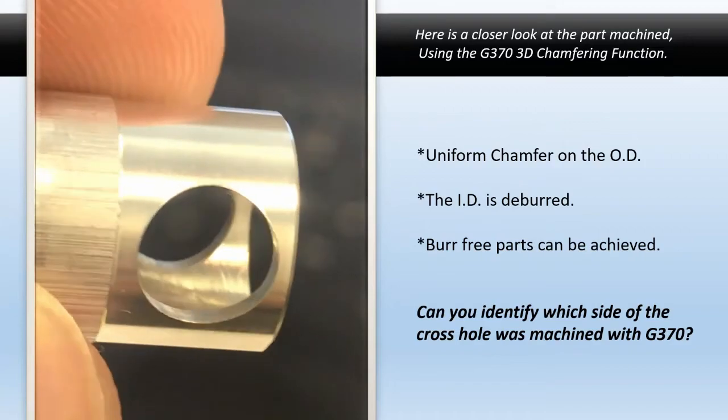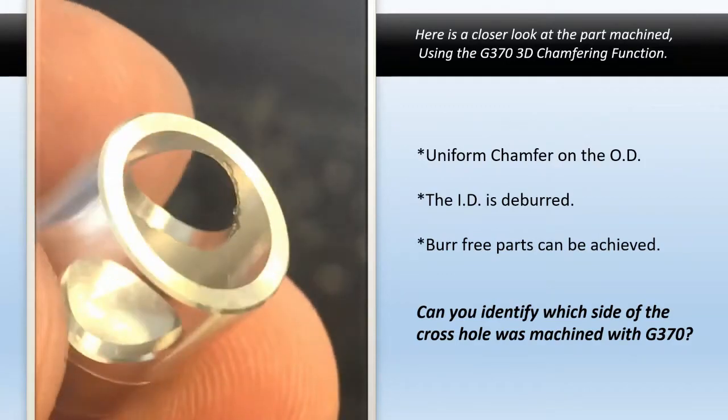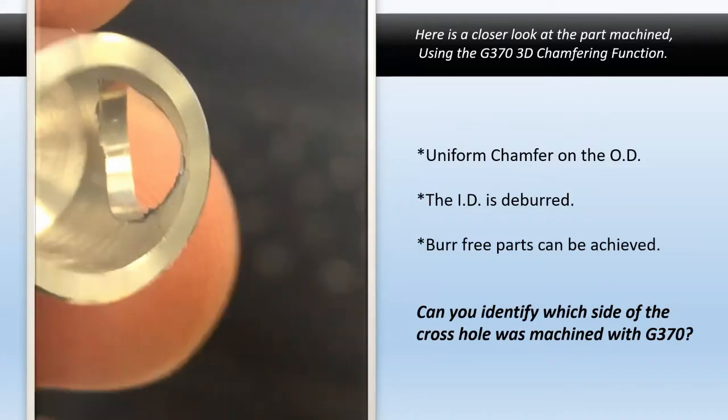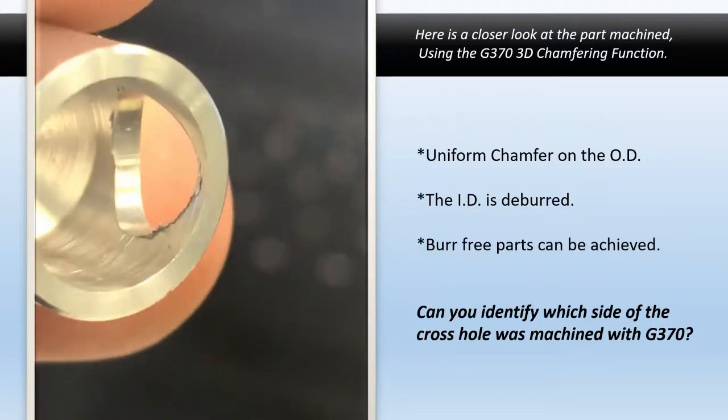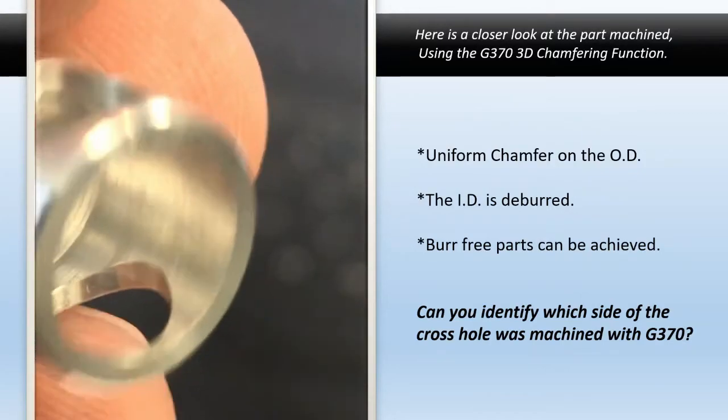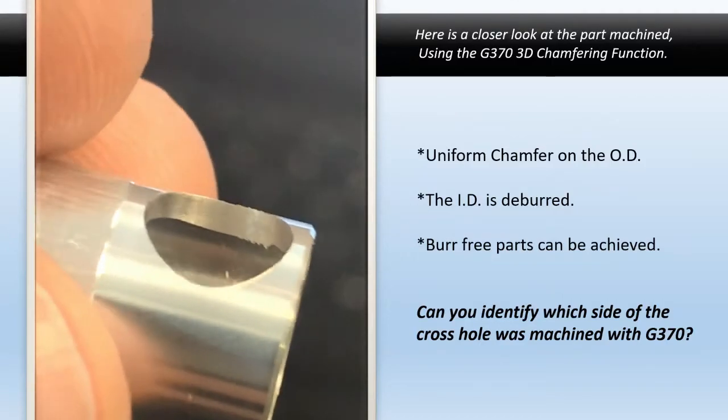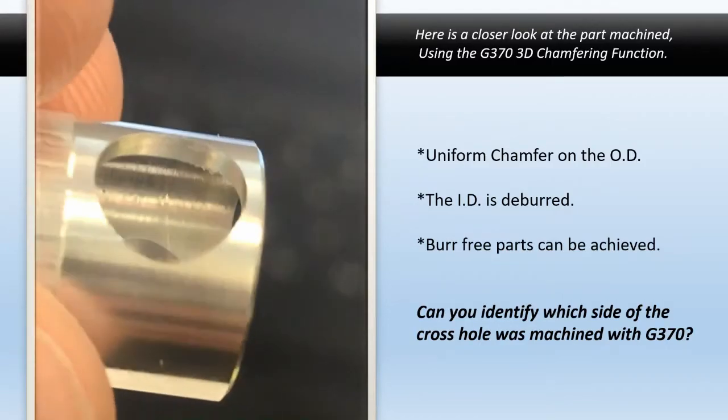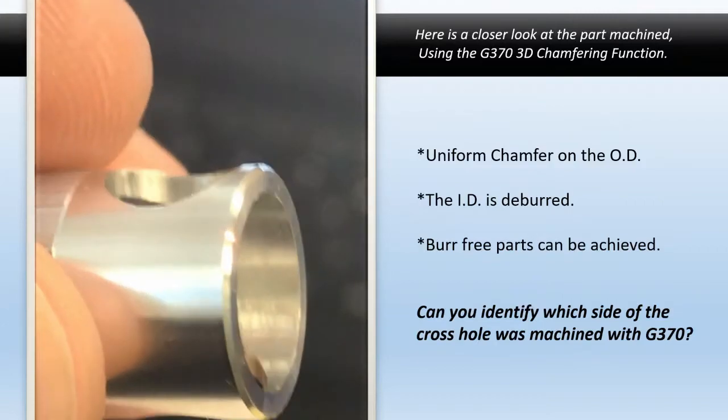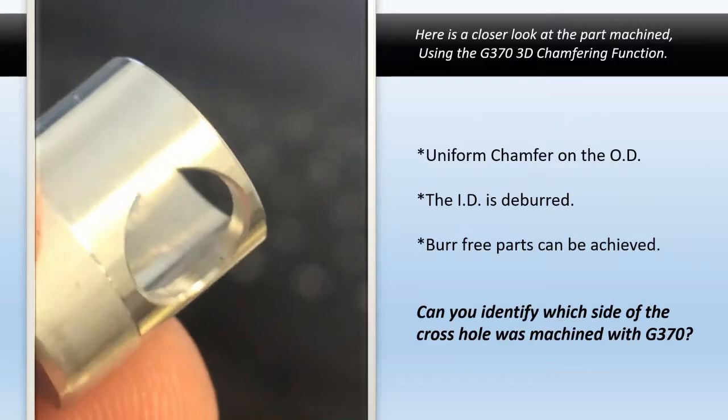Uniform chamfers on the OD and ID allow deburring of parts to be achieved. It's very obvious in this picture which side was chamfered and which side was not. How many times do you have to run a drill back in there to get rid of that burr, especially in aluminum or even brass? You may have some leftover flashing from the drill as it goes through.